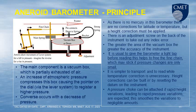The greater the area of the vacuum box, the greater the accuracy of the instrument. It is useful to give the barometer a light tap before reading, as this helps to free the fine chain which may stick if pressure changes are only small. It is simpler to transport and to read, while temperature correction is unnecessary. Height correction can be built in by resetting the datum on the instrument. A pressure choke can be attached if rapid height variations leading to rapid pressure variations are expected, which damps that variation to negligible amounts.